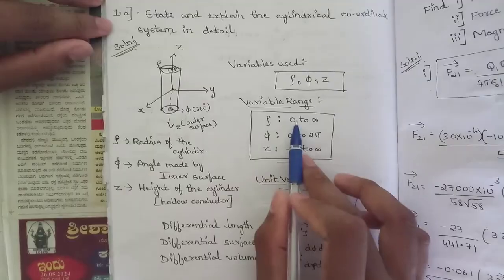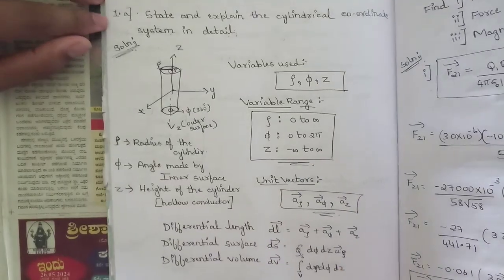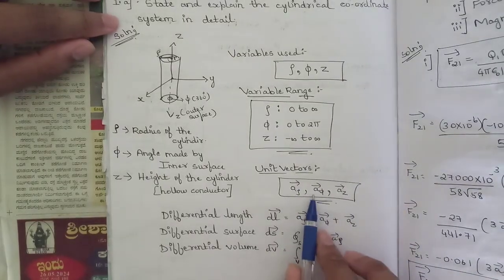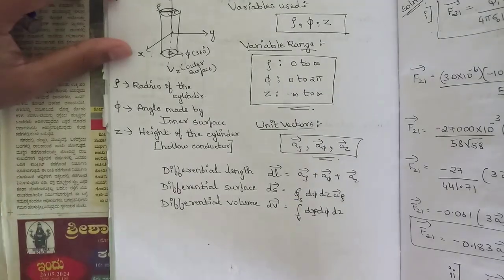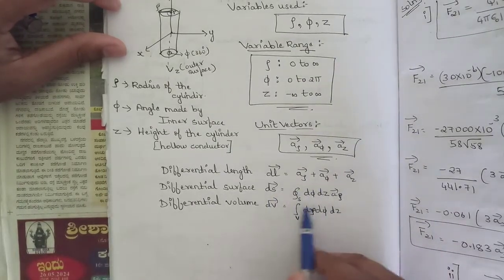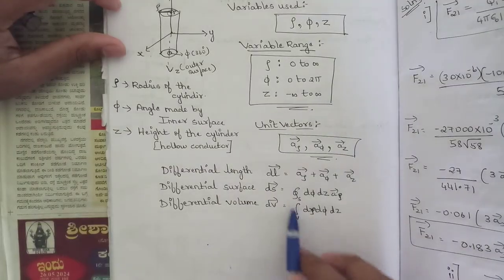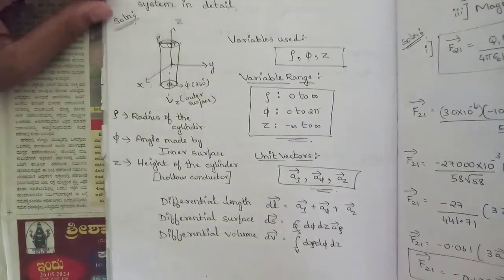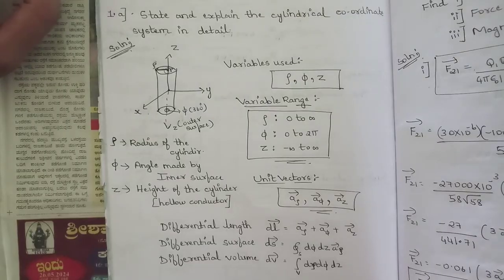The variable ranges are: ρ from 0 to ∞, φ from 0 to 2π, and z from minus ∞ to plus ∞. The unit vectors are aρ, aφ, and az. The differential length dl = dρ aρ + ρ dφ aφ + dz az. The differential surface dS involves two components at a time, e.g., ρ dφ dz aρ. The differential volume dV = ρ dρ dφ dz. This covers the cylindrical coordinate system for approximately six to seven marks.